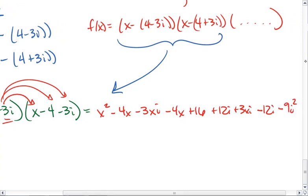Let's simplify over here. I see a 3xi and a negative 3xi, so those cancel. Positive 12i and negative 12i cancel. And I'm left with x squared minus 4x minus 4x plus 16 minus 9i squared.